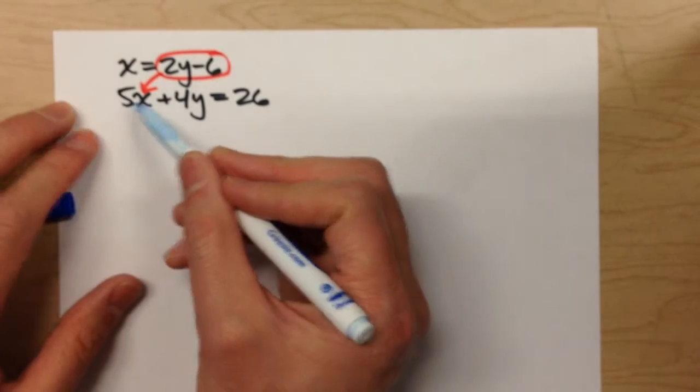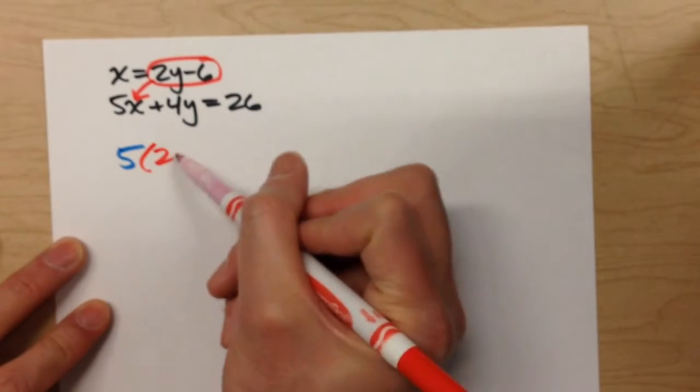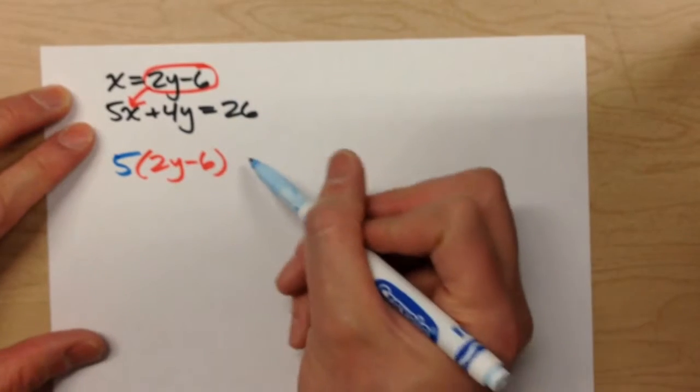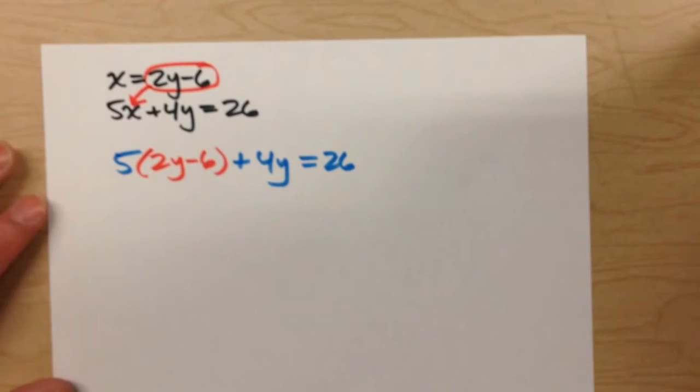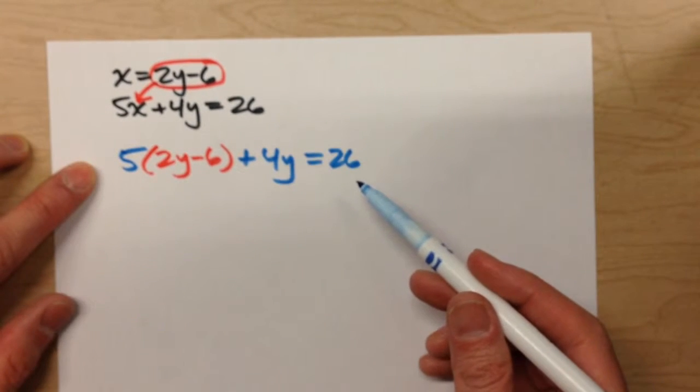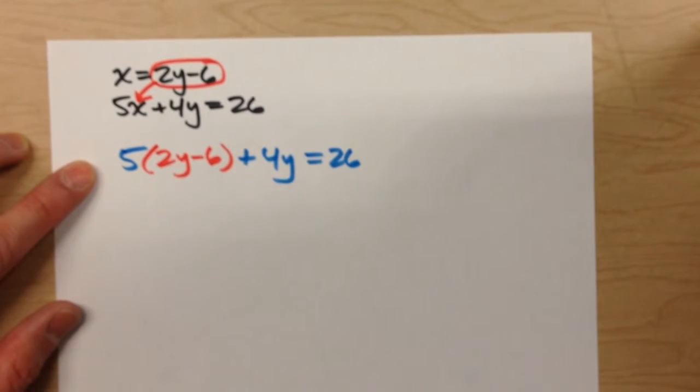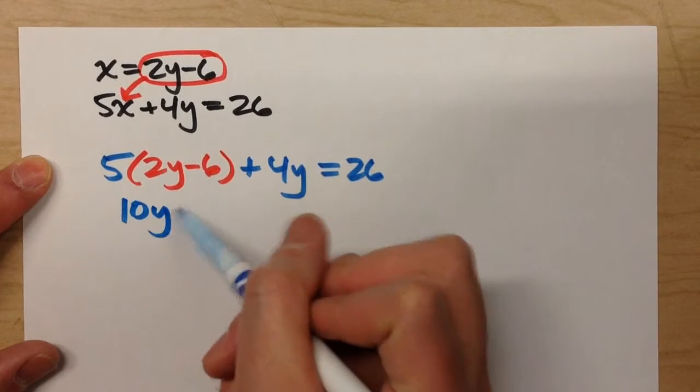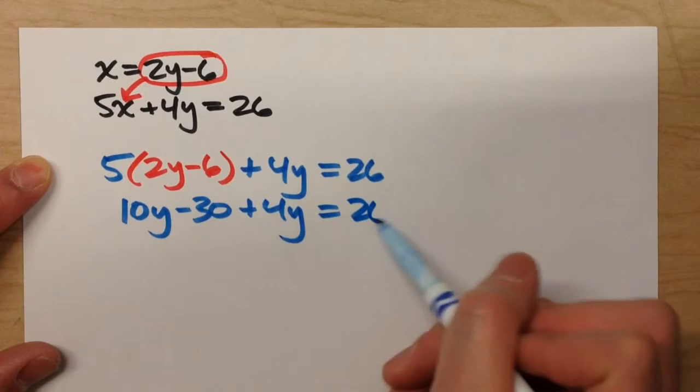So we're going to have, instead of 5 times x, we're going to do 5 times 2y minus 6 plus 4y equals 26. Notice this equation has all y's in it, so we're actually going to solve for y first this time. Distributive property: 10y minus 30 plus 4y equals 26.